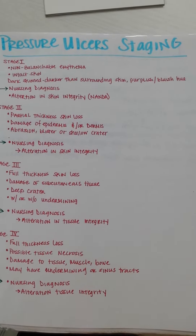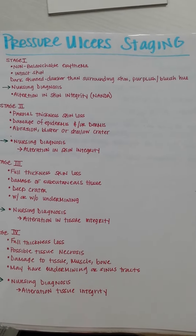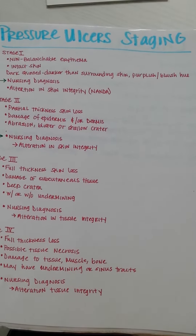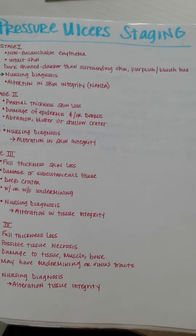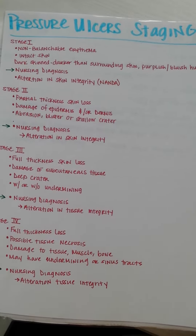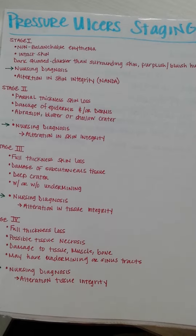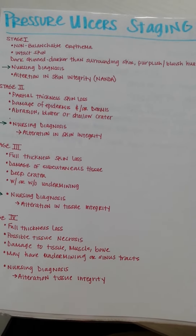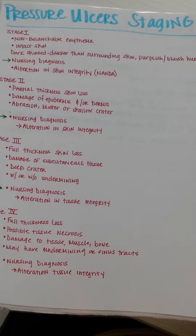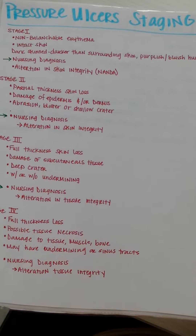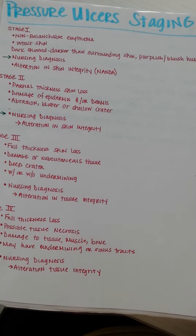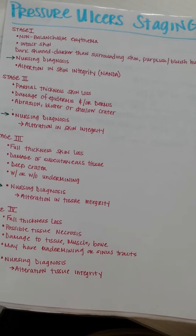Stage 1: intact skin with an area of persistent, non-blanchable redness, typically over a bony prominence that may feel warm or cold to the touch. The tissue is swollen and congested with possible discomfort at the site. With darker skin tones, the ulcer may appear blue or purple.